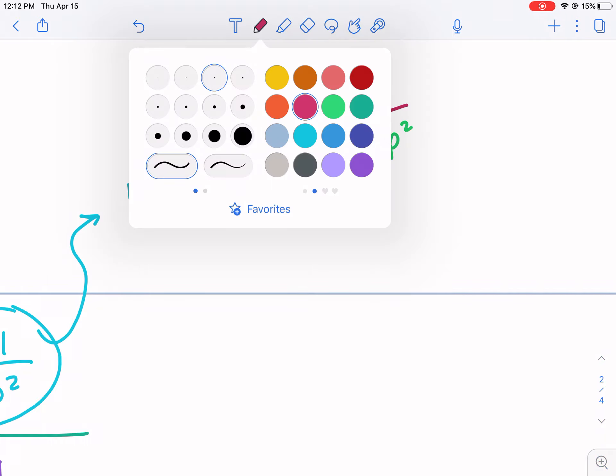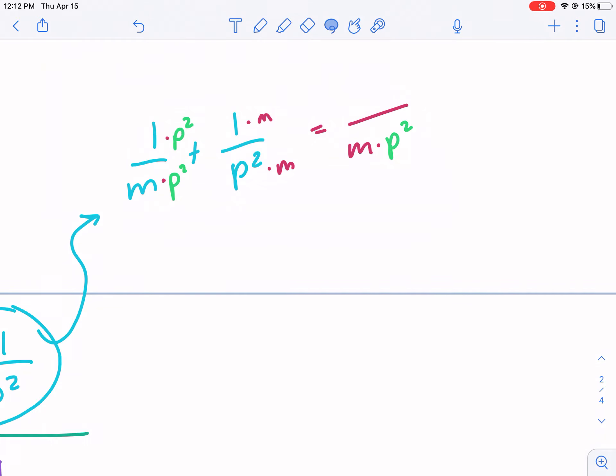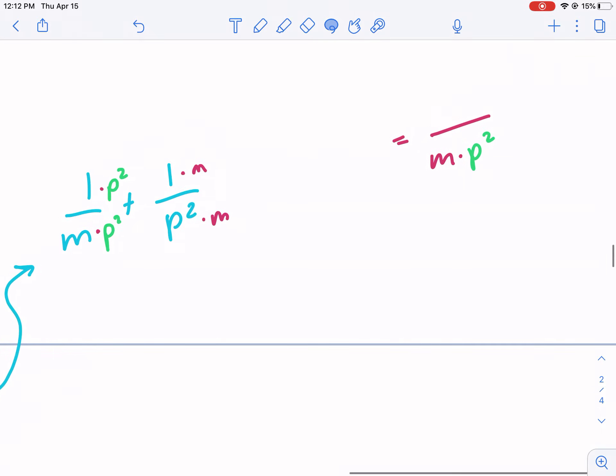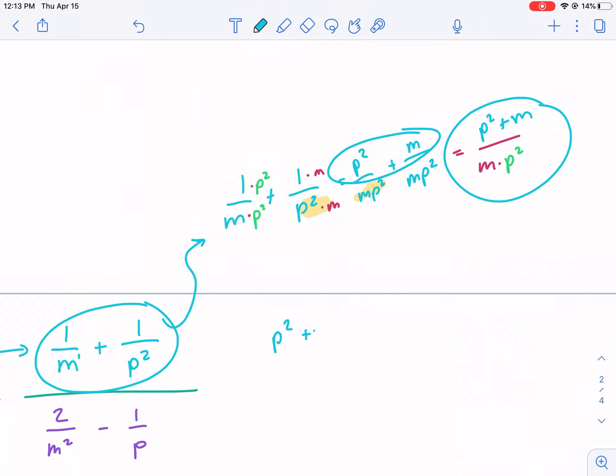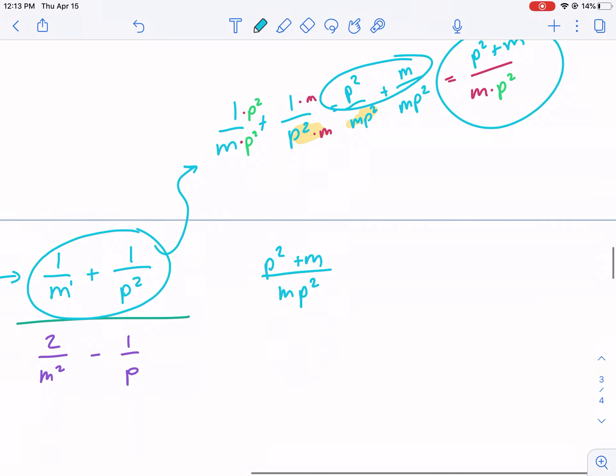So in the top, I just need to add these two guys. I get p squared plus m or m plus p squared. And this is all over our common denominator, which is m p squared or p squared m. So that is the simplified version p squared plus m over m p squared. We have the first one done.